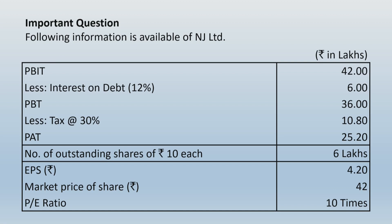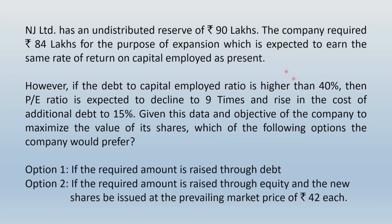NJ Limited has undistributed reserves of rupees 90 lakhs. The company requires rupees 84 lakhs for expansion, expected to earn the same rate of return on capital employed as at present. However, if the debt-to-capital-employed ratio is higher than 40%, the PE ratio is expected to decline to nine times, and the cost of additional debt rises to 15%. Given the objective of maximizing share value, the company considers two options: Option 1 — raise the required amount through debt; Option 2 — raise through equity shares issued at the prevailing market price of rupees 42 each.